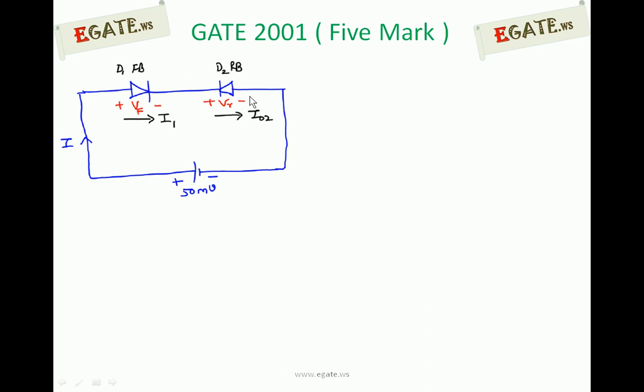Diode 2 is reverse biased. Under reverse bias, current always flows from negative to positive, that is N to P. This is equal to reverse saturation current I0. If you observe, current flowing through D1 and current flowing through D2 are both in the same direction.